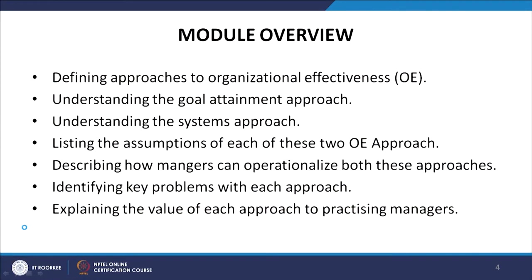We have talked about the definition and the problems in defining organization effectiveness in module 5. In module 6, we will talk about defining the approaches to organization effectiveness, understanding the goal attainment approach, understanding the systems approach, listing the assumptions of each of these two approaches, and describing how managers can operationalize both these approaches.